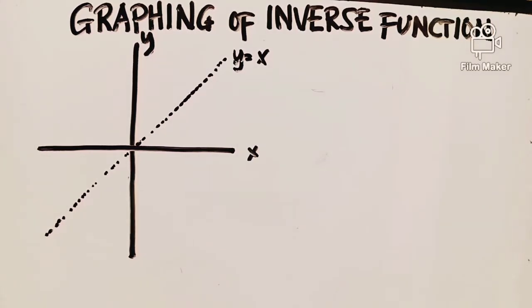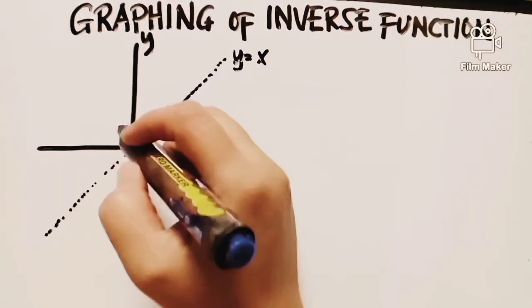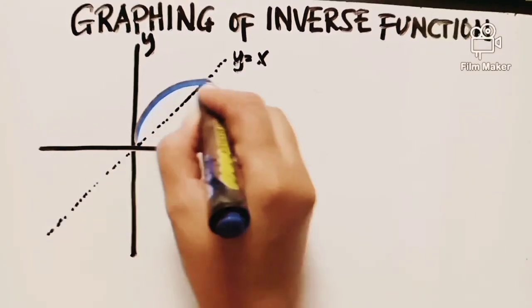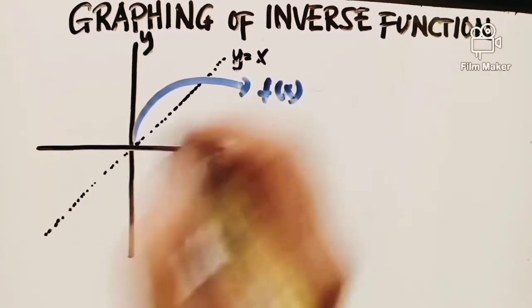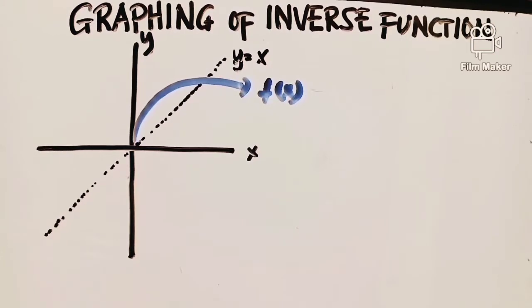We will use two colors. How do we get the inverse function? Of course, we have this kind of graph. The function f(x) always comes first. I will draw it like this — this is our f(x). How do we make the inverse function? When we say inverse, it is the reverse — like a mirror, the opposite side.